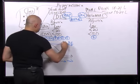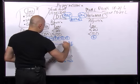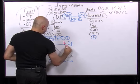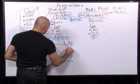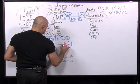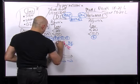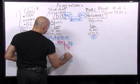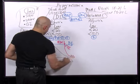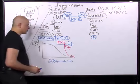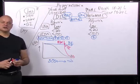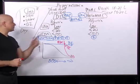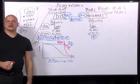The way to tell central from nephrogenic diabetes insipidus: in central diabetes insipidus, when I give desmopressin (ADH), the urine volume will go down. That's how you tell central from nephrogenic.